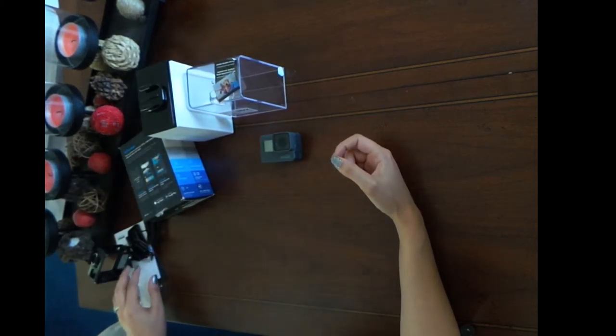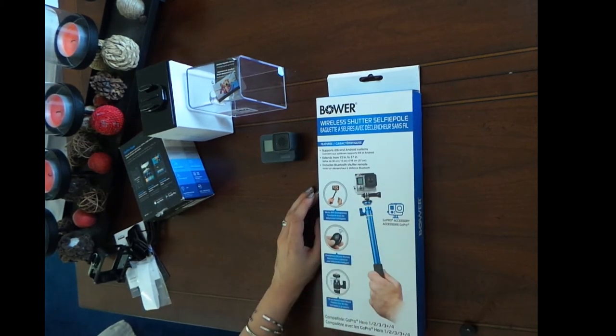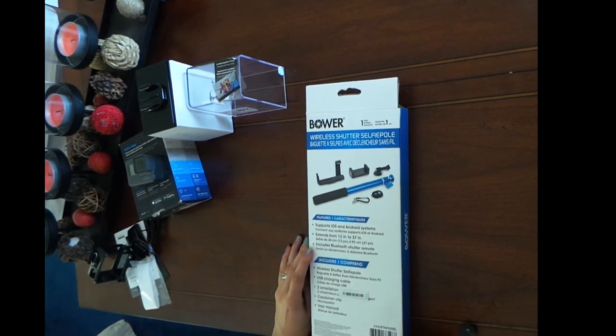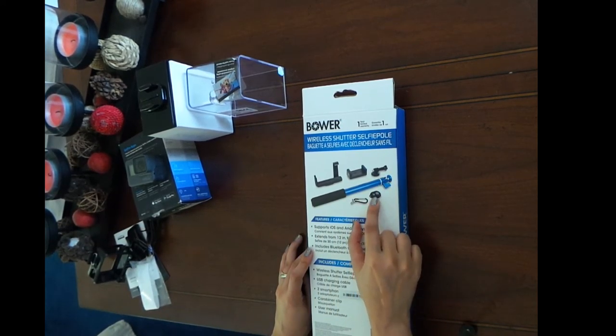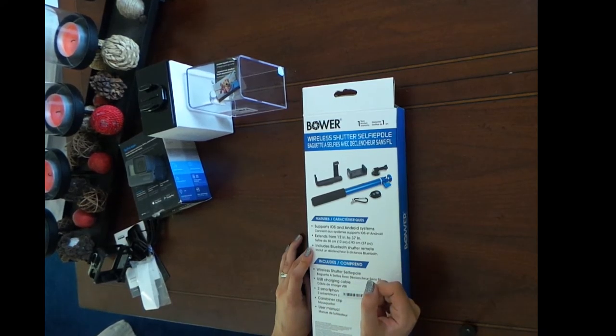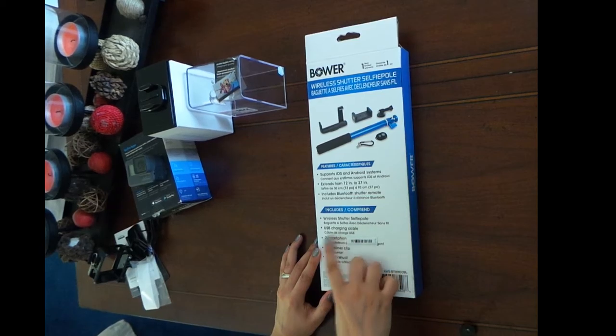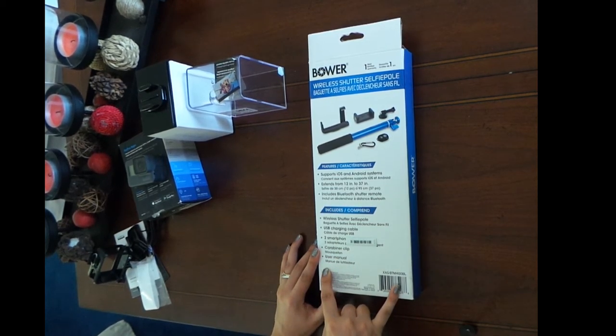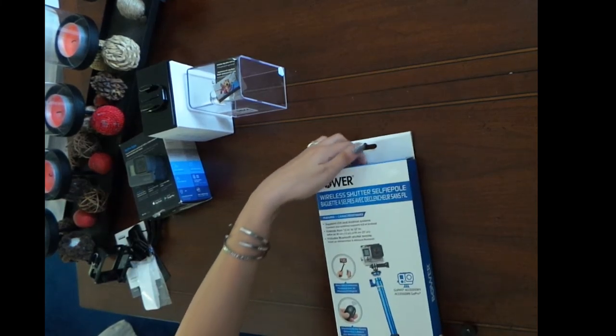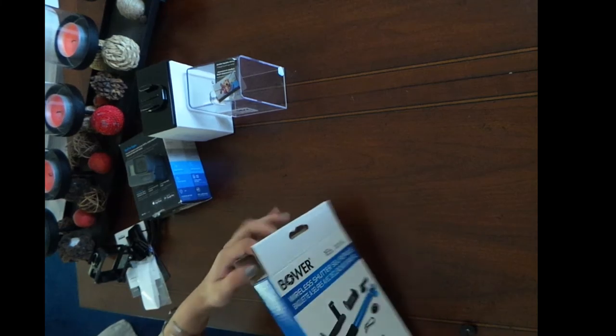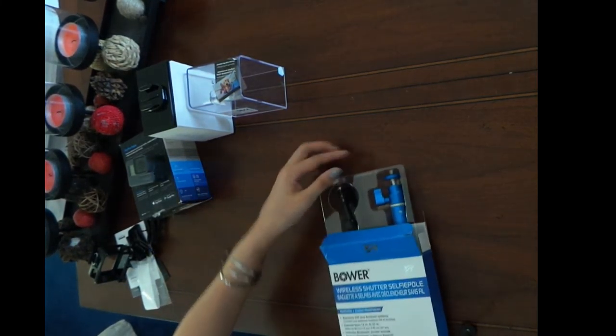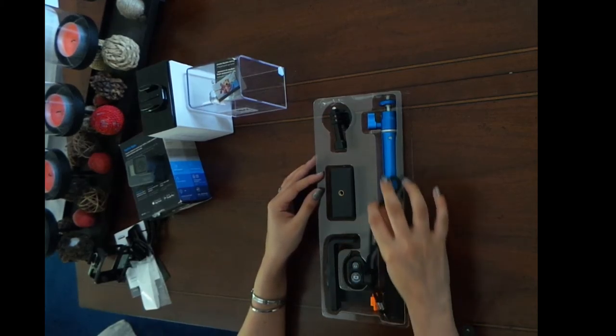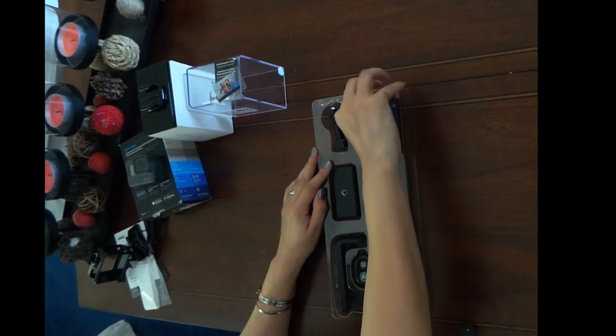And we will have a look at the second package, which was wireless shutter selfie pole. All right. So again, this comes with a few different pieces. It looks like the main pole, there is some sort of button, some other bits to keep them stable. It says that it comes with a wireless shutter selfie pole, USB charging cable, two smartphone adapters, a clip, and a user manual. All right, nicely packaged. I'm glad they're not just floating around in the box.